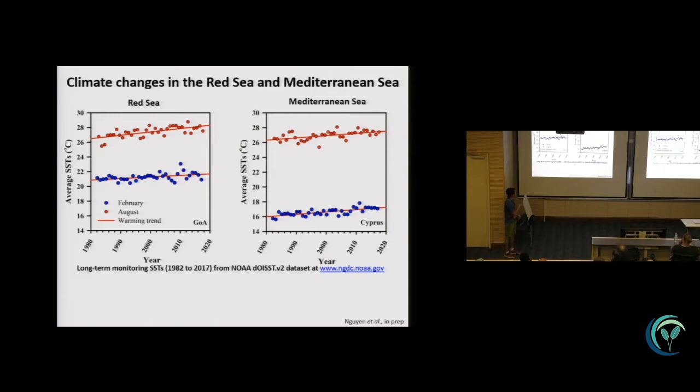There is a long-term monitoring data of the sea surface water temperatures from both the Red Sea and the Mediterranean Sea. In the red dots, you can see the summer temperatures, and in the blue dots the winter temperatures. What we can see clearly from here is in both seas, the sea surface temperatures are warming up very quickly.